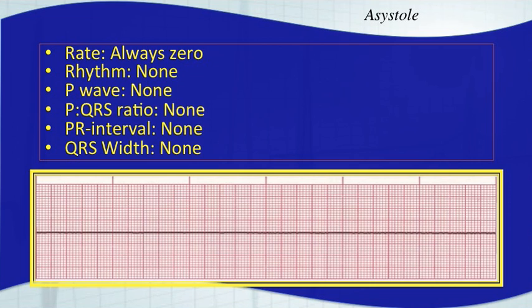We do treat patients that are in asystole and there have been returns of spontaneous circulation in patients that are in asystole. But it is the toughest rhythm to save someone from because you don't really know how long they've been in it. It's much less viable than a patient that's in V-fib or even PEA.